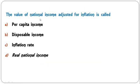Gross value added at market price (GVA MP) of each sector is calculated, and the summation of total GVA MP of all sectors is obviously equal to GDP MP. So A is the correct answer.